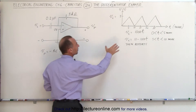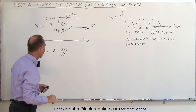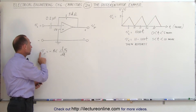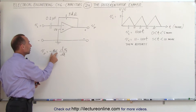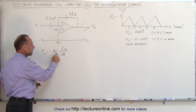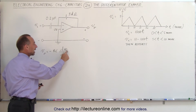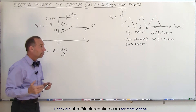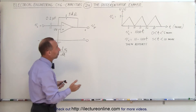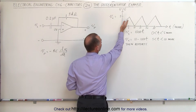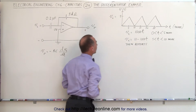So we're going to find the output voltage for the first sawtooth. The equation for the output voltage is the negative of the time constant R times C, times the rate of change with respect to time of the input voltage. We'll have to do it twice — first for this part of the equation, then for this one.